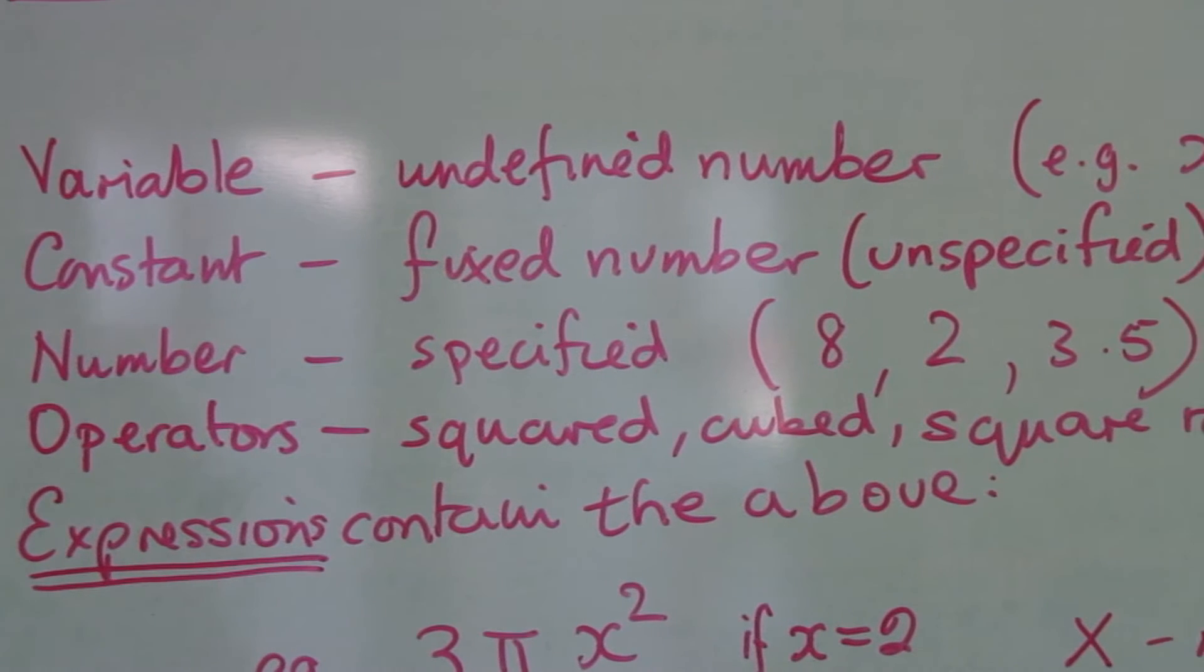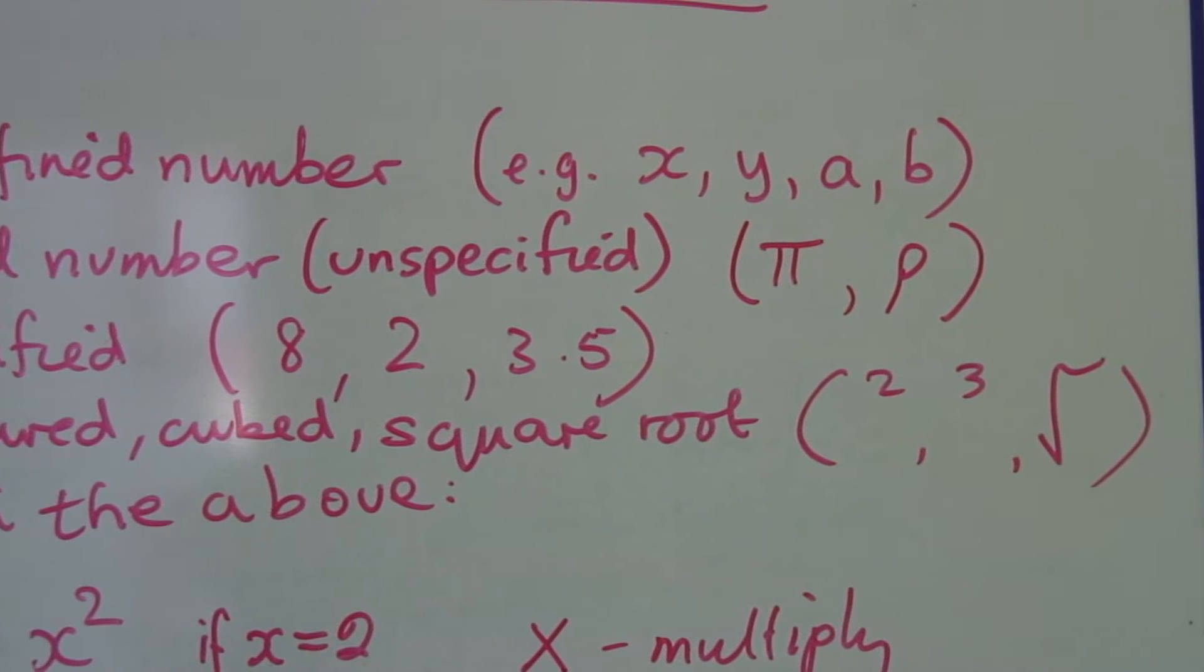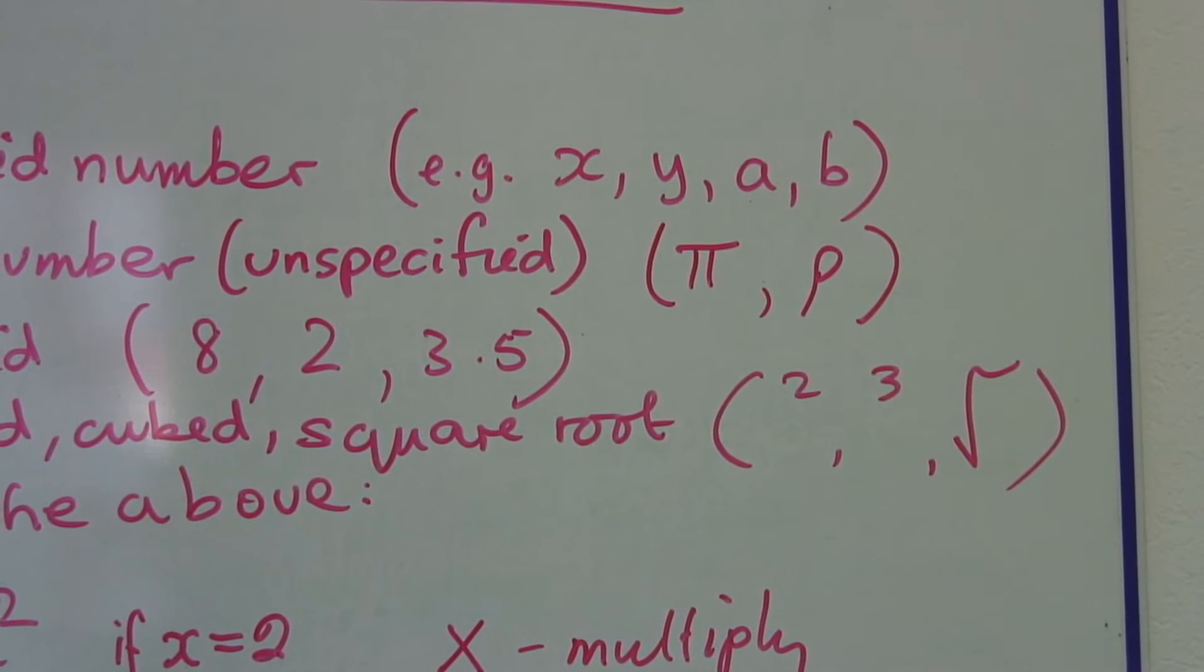There are also numbers. These are specified numbers, that is, it's written as 8 or 2 or 3.5. It's just a number.